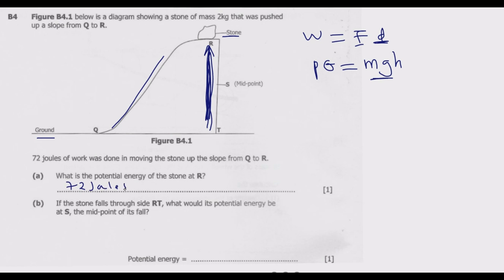The potential energy of the stone at R is equal to the work done, which is 72 joules. Once you do that, you are good to go to get this one mark.